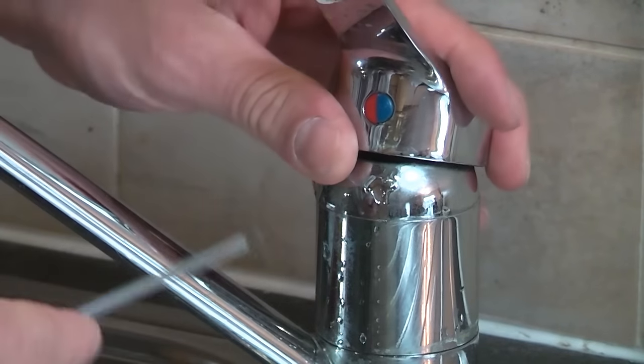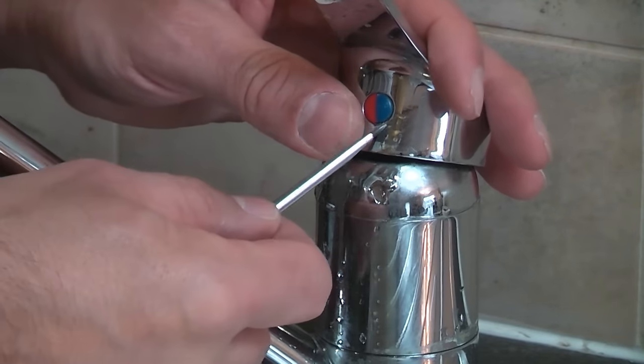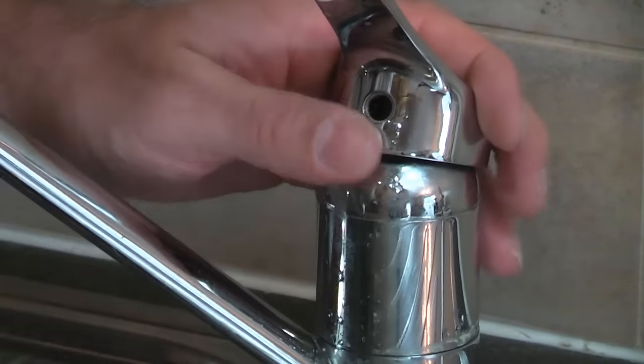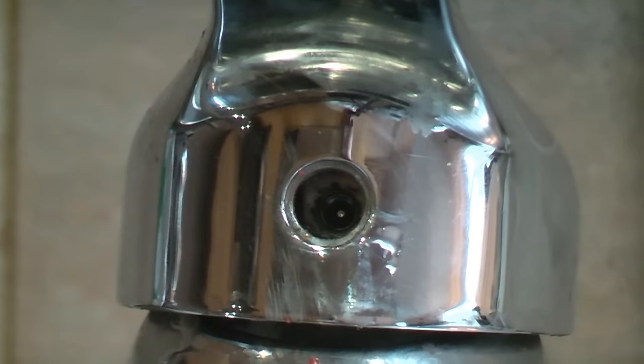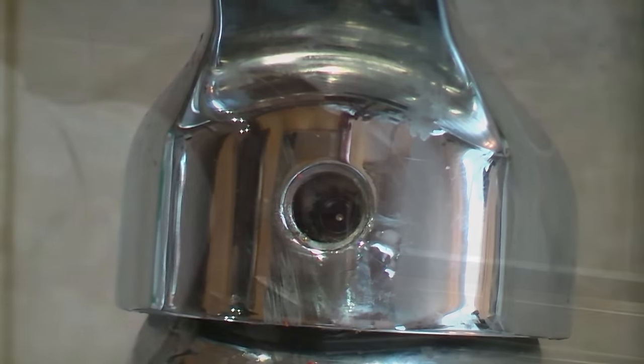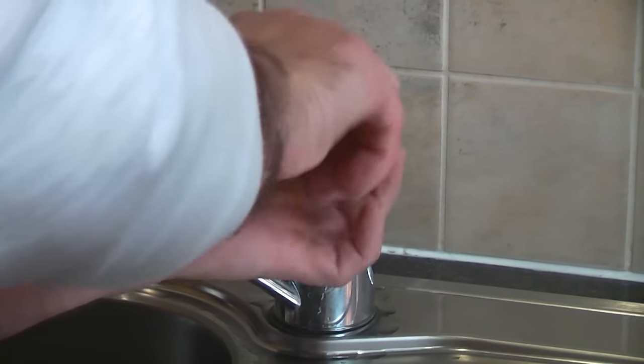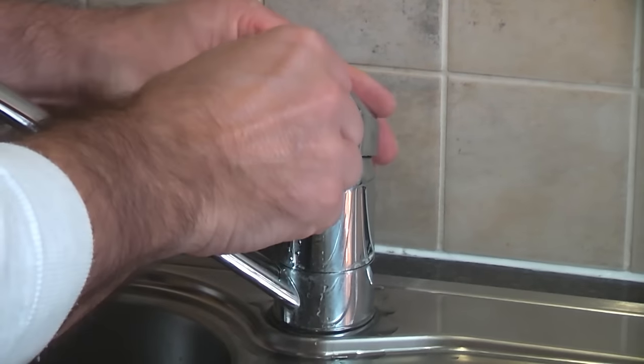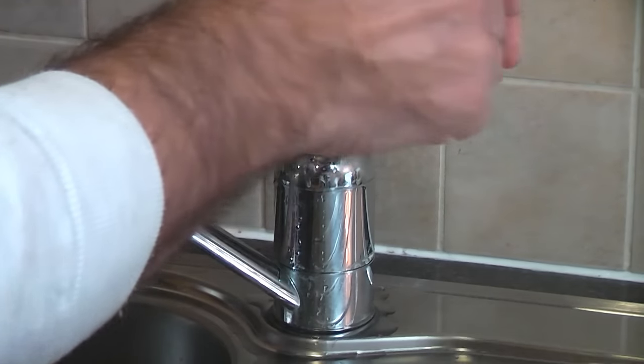I'm just going to take a small screwdriver and I'm just going to pry off the plastic cap off the front. If you look through the hole, you can actually see a grub screw which needs undoing with an allen key. Once we've loosened that, we can then lift off that cap.